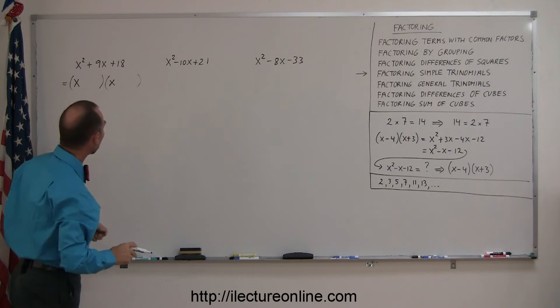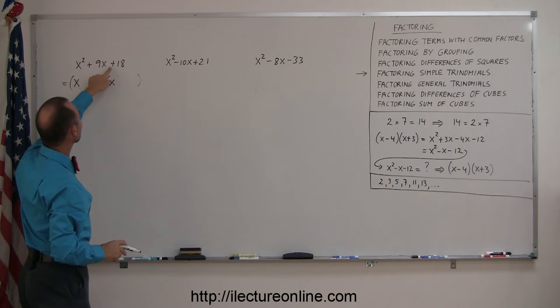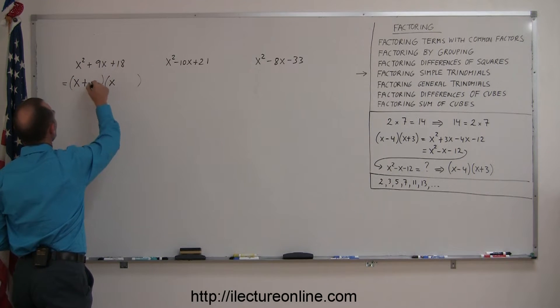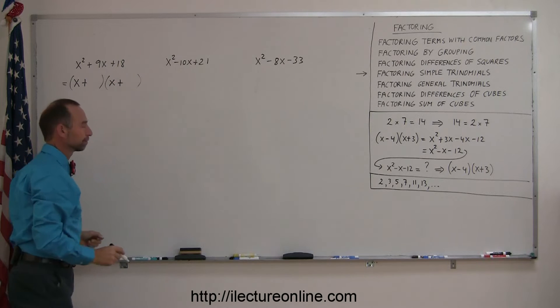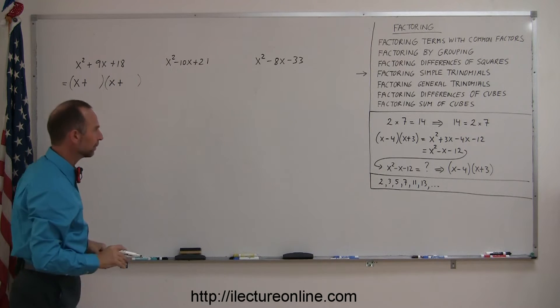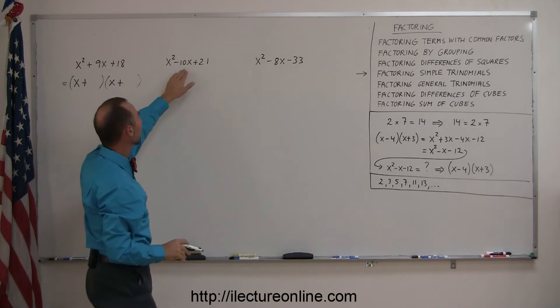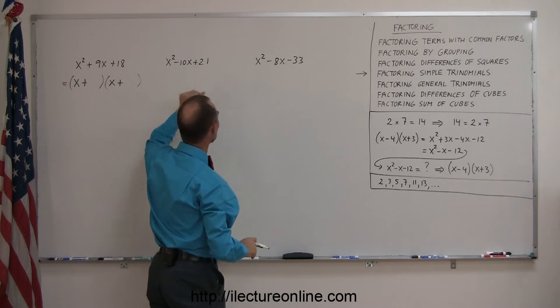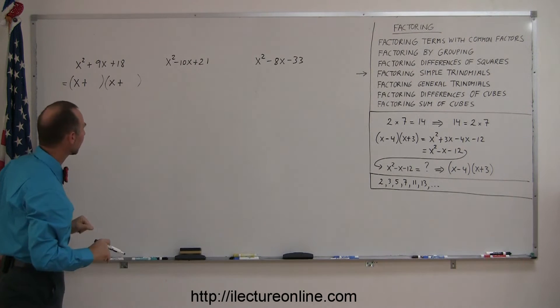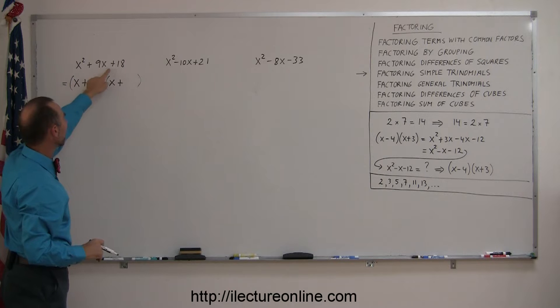The next thing I look at is the signs. If all the signs are positive, I need a plus here and a plus there. We'll look at the other cases later when they're not all positive. But in the case that they're all positive, you'll put a plus and a plus, and you have an x squared here, so you'll put an x and an x.